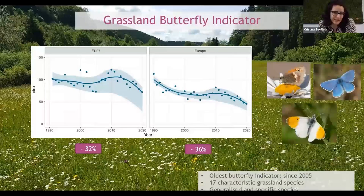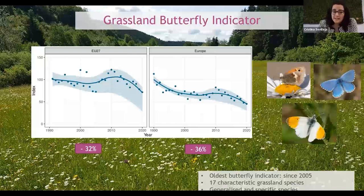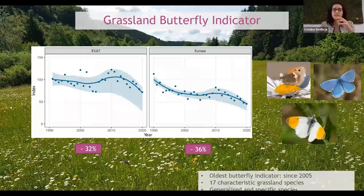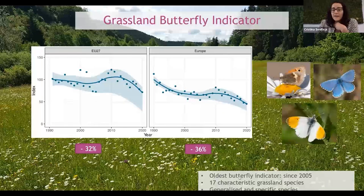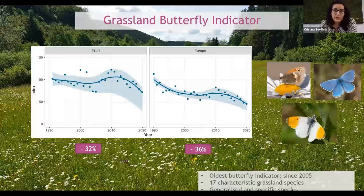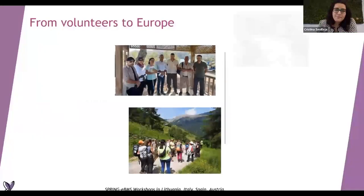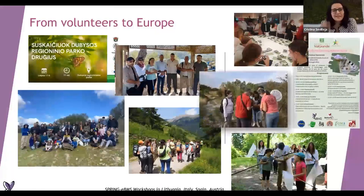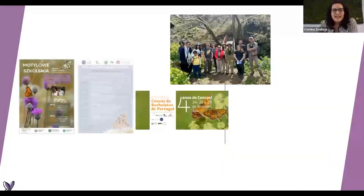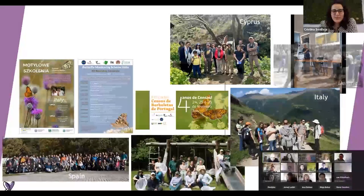This is our most important indicator - the grassland butterfly indicator - which tells us that since the 90s we have been losing butterflies every year. This is a combination of all the transects, in this case in the EU and the whole of Europe. We included 17 characteristic grassland butterflies that use the habitat to tell us how these habitats are doing in Europe. Yes, you can see there is a big decline happening. More people are joining everywhere - we have trainings and more and more people.